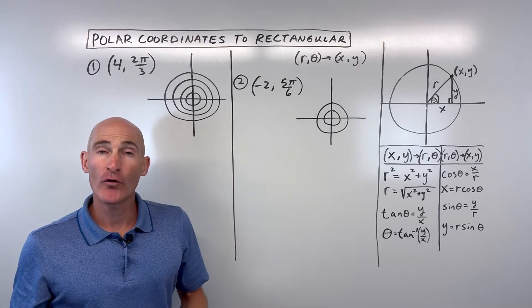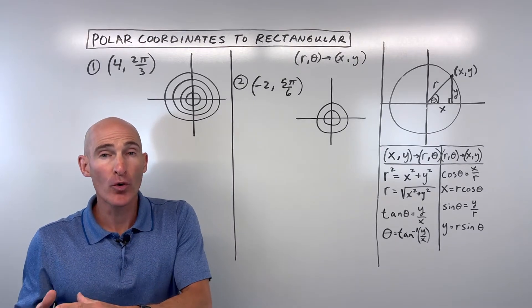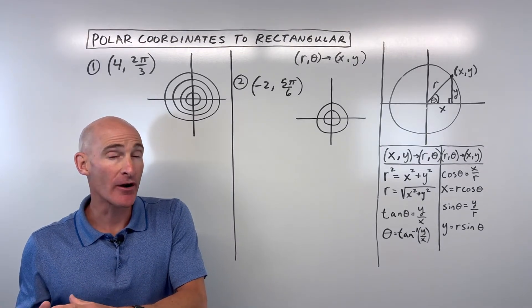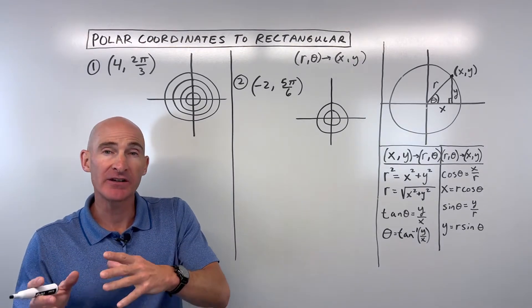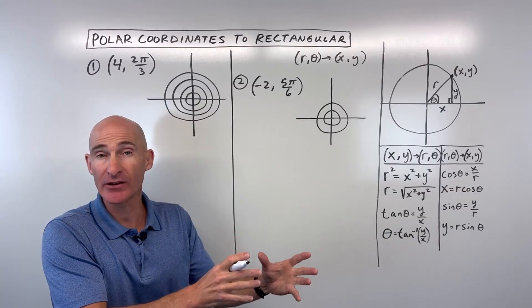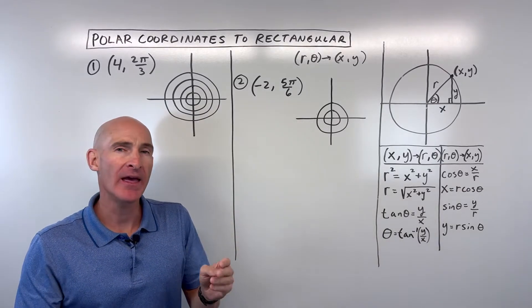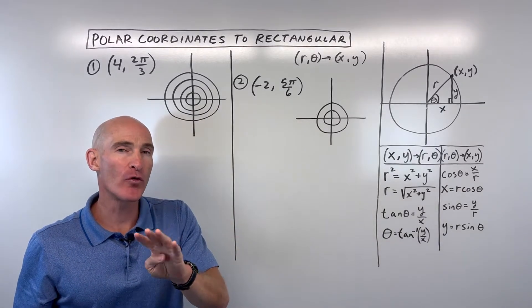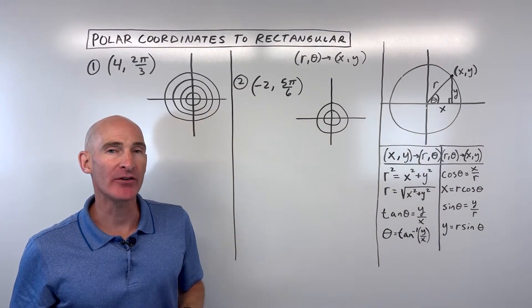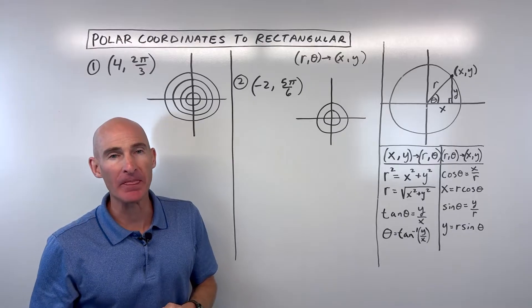In this video, you're going to learn how to go from polar coordinates (r, theta) to rectangular coordinates (x, y), and we're going to go through four examples together. So let's dive in.